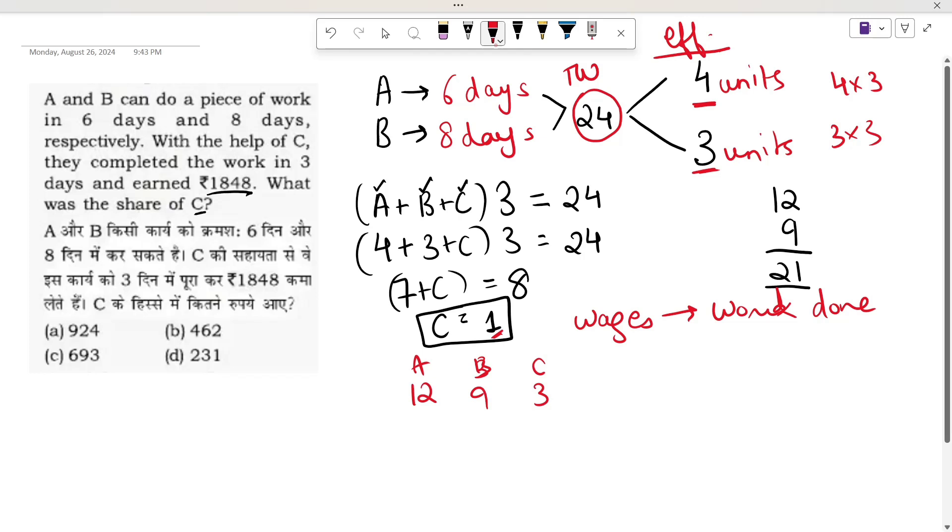The ratio of work done is A:B:C. In this case, 4 times 3 is 12, 3 times 3 is 9, and 1 times 3 is 3. So who will it be? 4, 3, and 1.